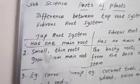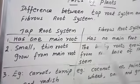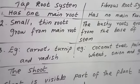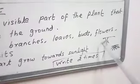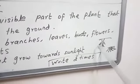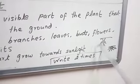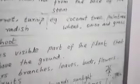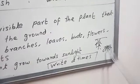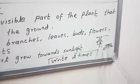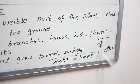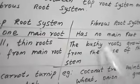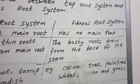Small thin roots grow from the main root — see the picture, the small thin roots grown from the main root. The bushy roots grow from the base of the stem. Bushy means it has totally grown up, so the bushy roots grow from the base of the stem.